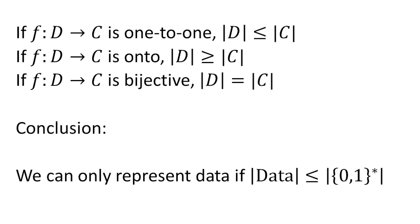This was apparent for finitely sized sets, that these inequalities were going to hold based on those functions. And what we can do is think of this as also applying to infinite sets when we're trying to do representations. We can only do a representation of our data if there can be a one-to-one mapping from the data to the strings — in other words, we're only going to be able to represent our data if the cardinality of the set of data is less than or equal to the cardinality of the set of all strings.